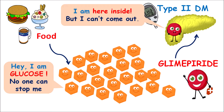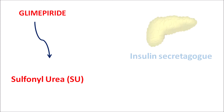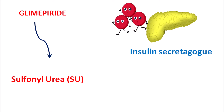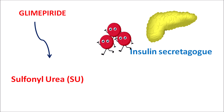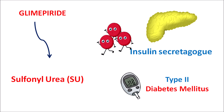Glimepiride acts on the pancreas where it increases the release of insulin, which counteracts the actions of glucose. In this way, glimepiride can control glucose levels in patients with type 2 diabetes mellitus. Glimepiride is one of the sulfonylureas and acts as an insulin secretagogue, increasing the secretion of insulin from the beta cells of the pancreas. It is indicated in patients with type 2 diabetes mellitus. In type 1 patients, glimepiride is ineffective as most of the beta cells are destroyed.